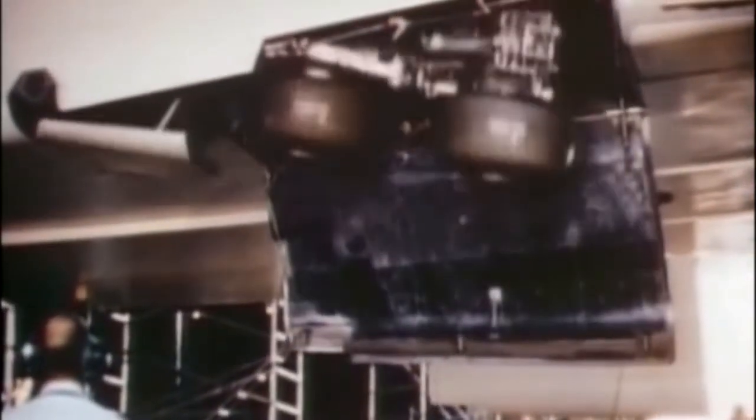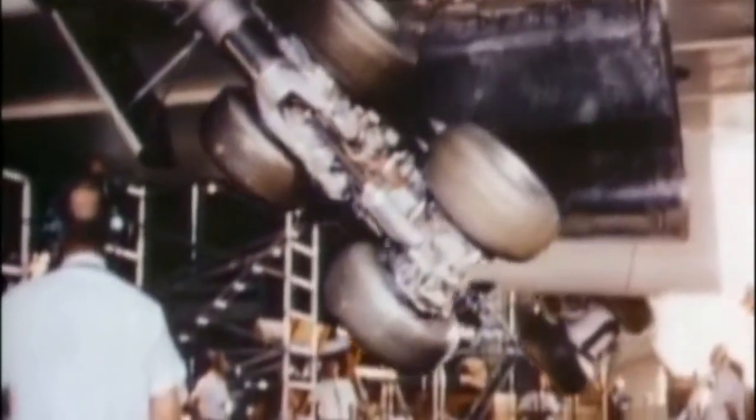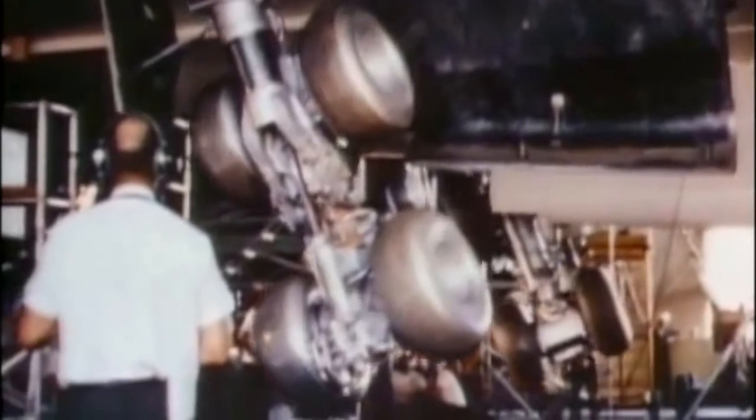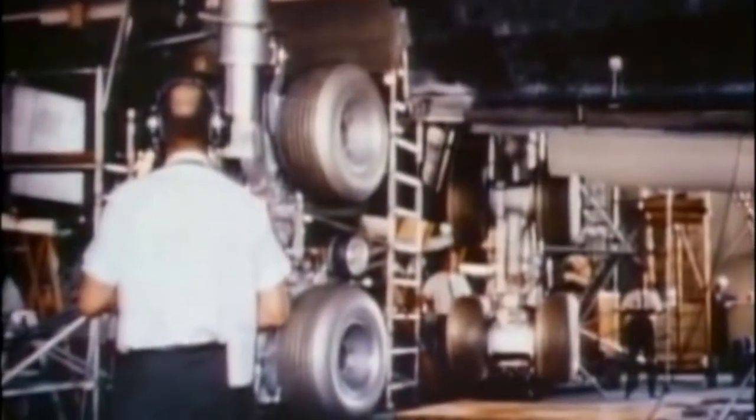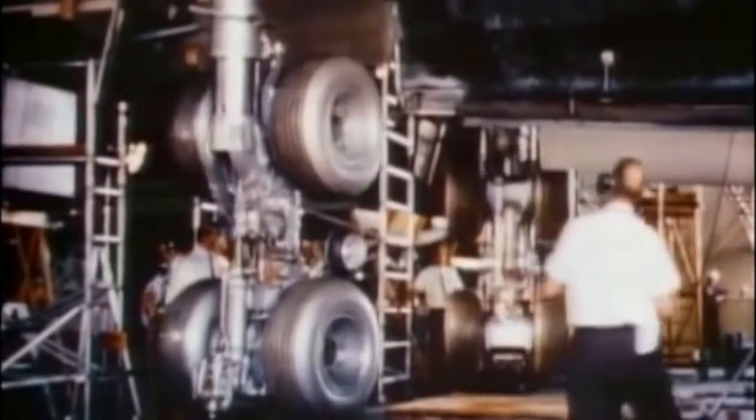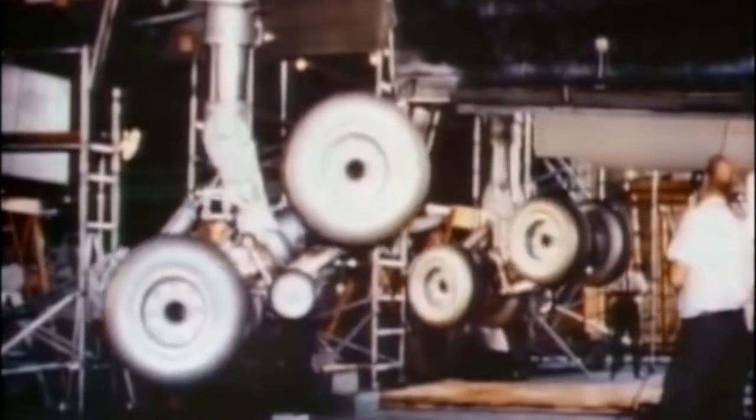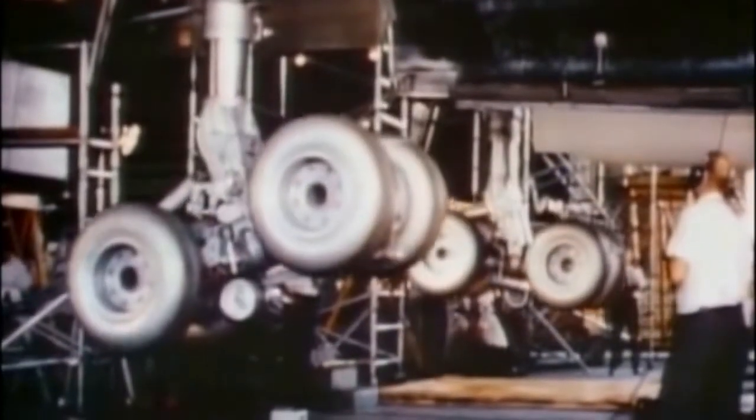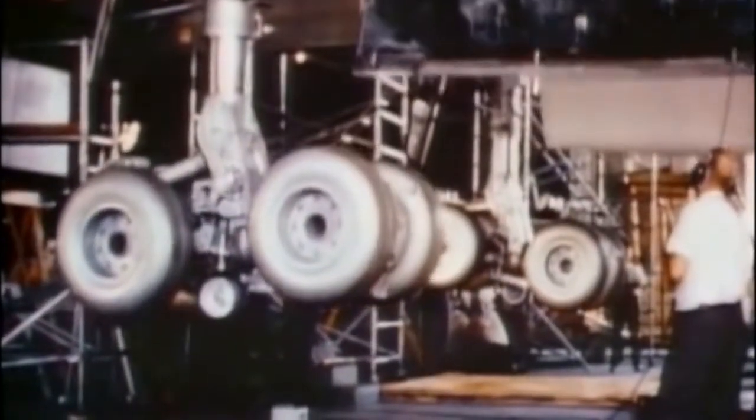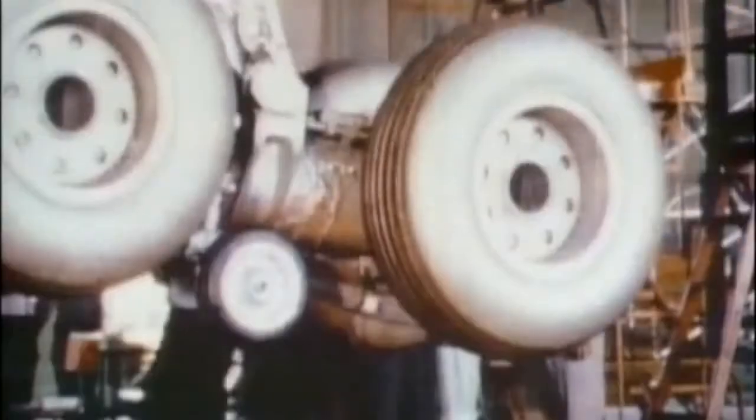In order to obtain those supersonic speeds, almost the whole fuselage and wings of the Valkyrie was filled with fuel, which meant that space was limited. For this reason, the designers added another unique and innovative feature to the aircraft. When a landing gear extended or retracted, it rotated and folded in a complex fashion in order to fit inside the small storage bays.